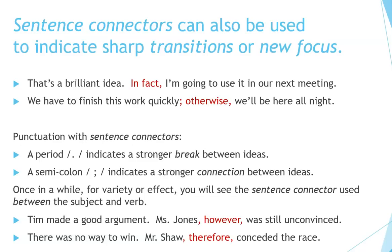Punctuation with sentence connectors: a period indicates a stronger break between ideas, while a semicolon indicates a stronger connection. Once in a while, for variety or effect, you will see the sentence connector used between the subject and the verb. For example: 'Tim made a good argument. Ms. Jones, however, was still unconvinced.' 'There was no way to win. Mr. Shaw, therefore, conceded the race.'